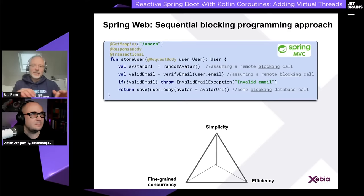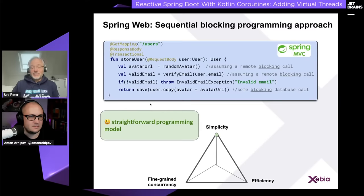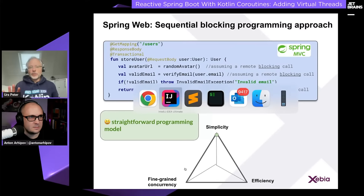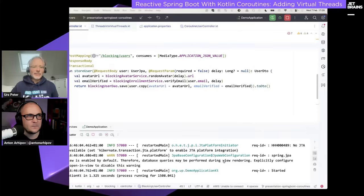This example looks very straightforward, and what I try to do is put different configurations side by side and evaluate them. It's definitely a simple configuration — the programming model is very straightforward, it's plain Kotlin, no additional abstractions involved. That's the big plus of this approach: simplicity. But how about efficiency and fine-grained concurrency? I'm going to show you some tests that will let you fill in those items yourself.